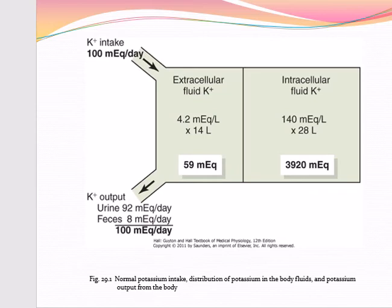Potassium content in a single meal may be as high as 50 milliequivalent, and daily intake usually ranges between 50 and 200 milliequivalent per day. Maintenance of balance between intake and output of potassium depends primarily on excretion by the kidney, because the amount excreted in feces is only about 5 to 10% of potassium intake. The kidney must adjust its potassium excretion rapidly and precisely in response to wide variation in intake.